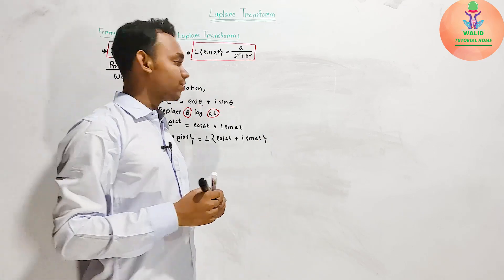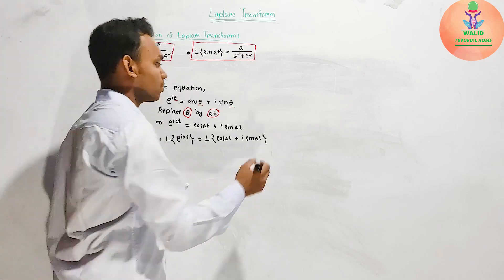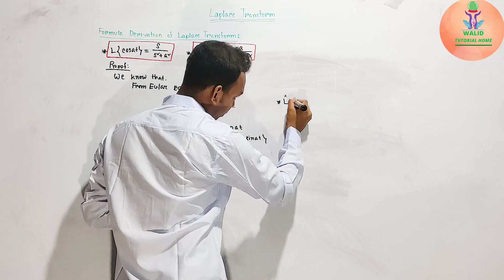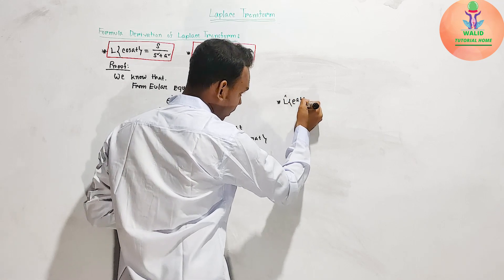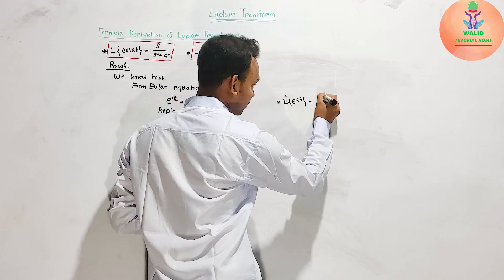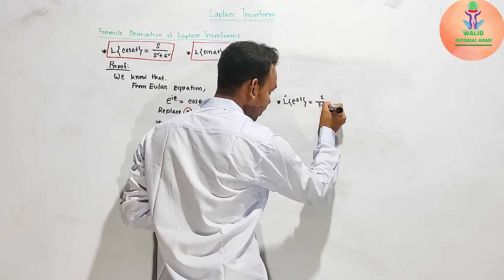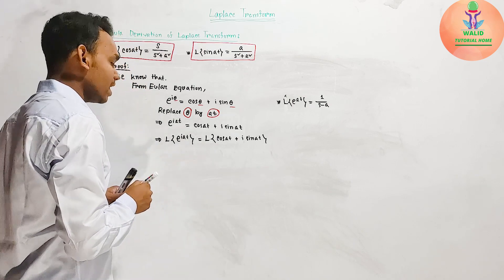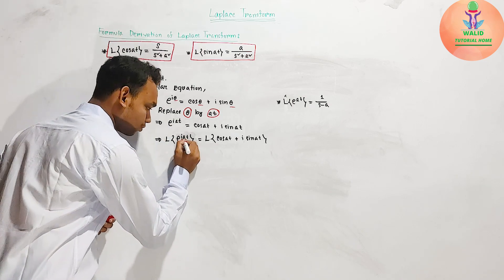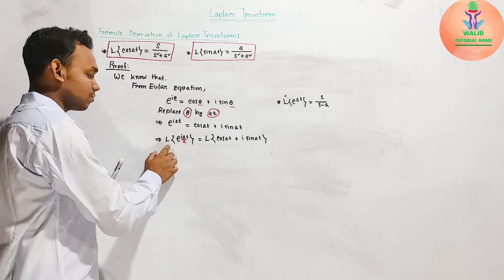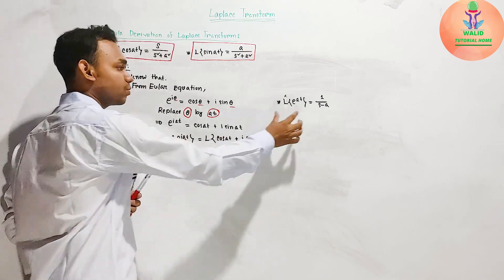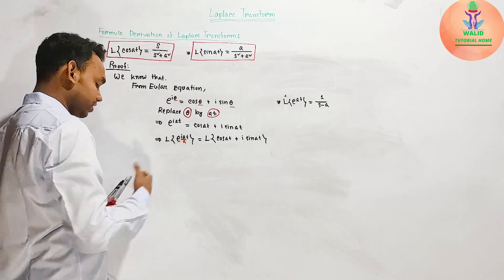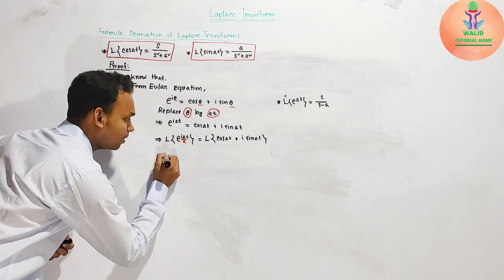Now we take the Laplace transform of e to the power i·at. We already know the formula: the Laplace transform of e to the power at equals 1 divided by (s minus a). So the Laplace transform of e to the power i·at equals 1 divided by (s minus ia).